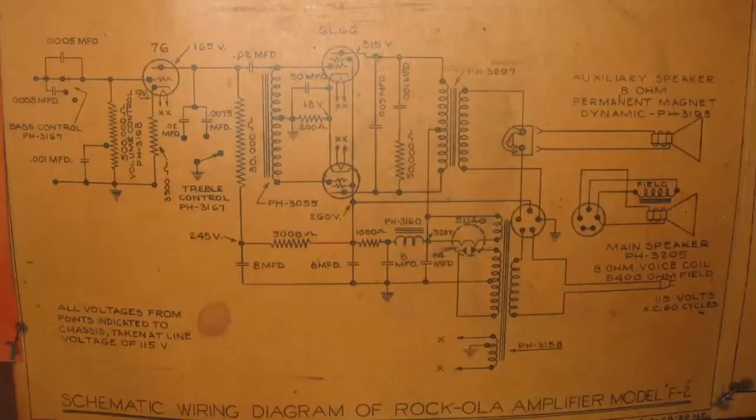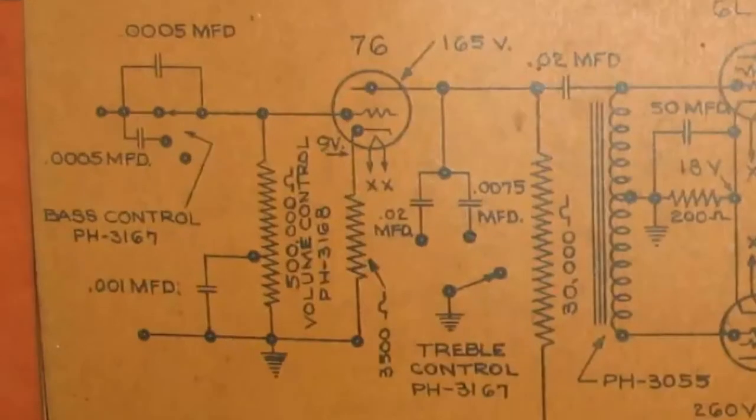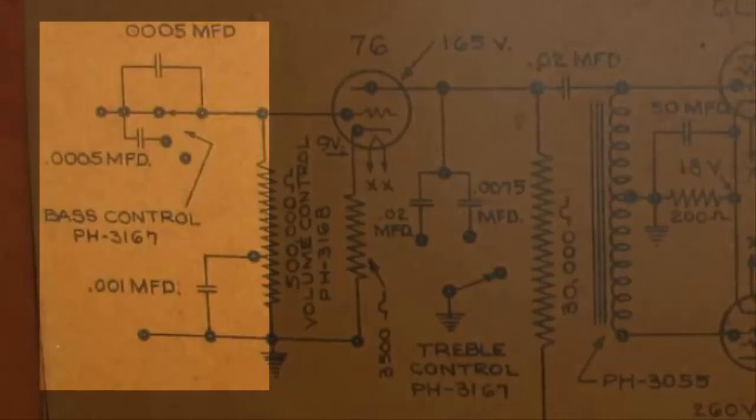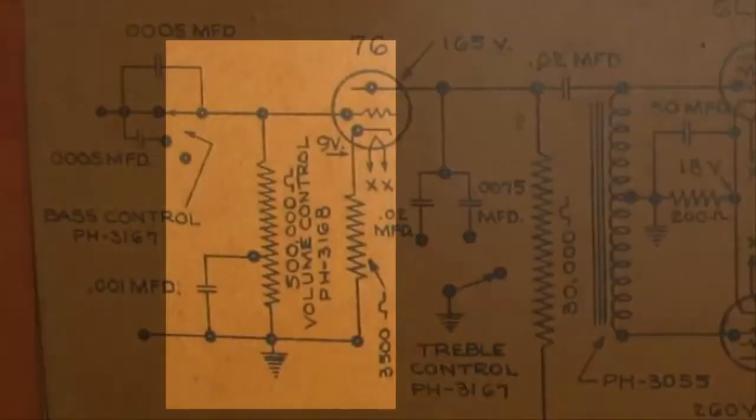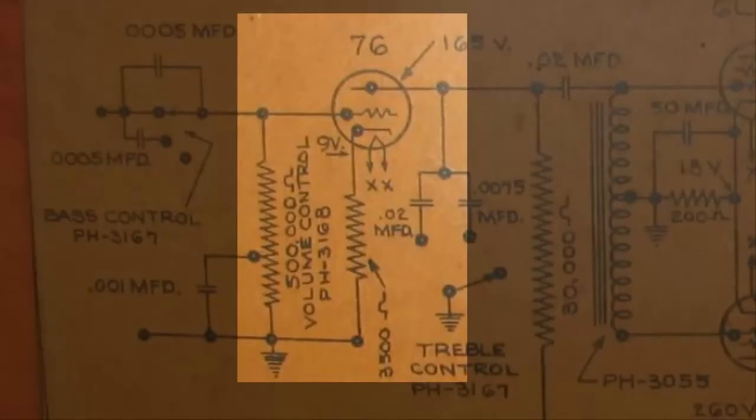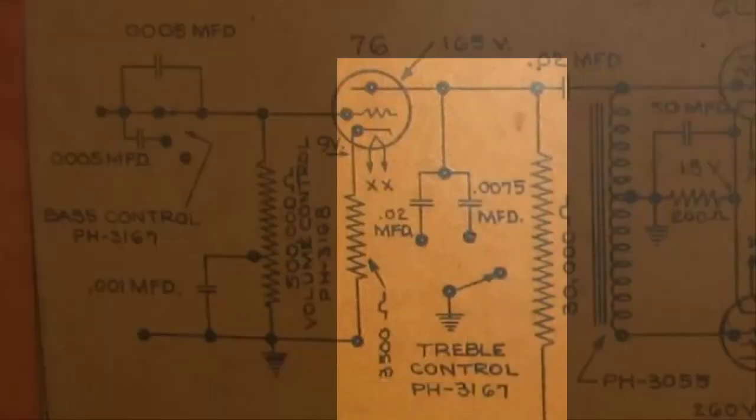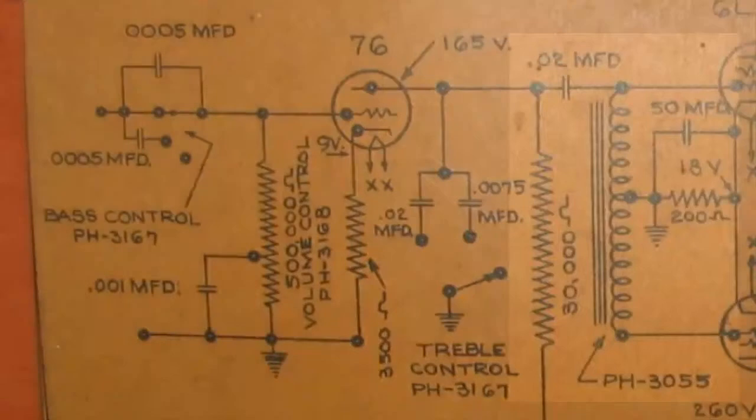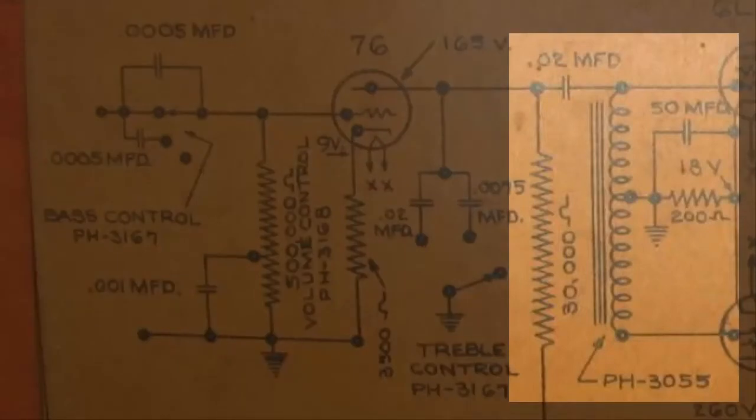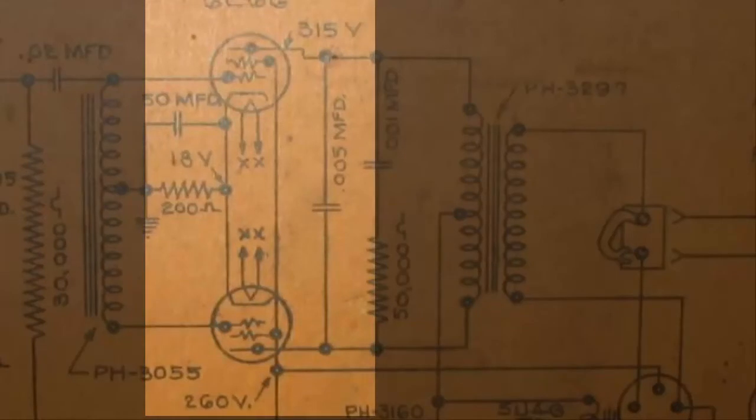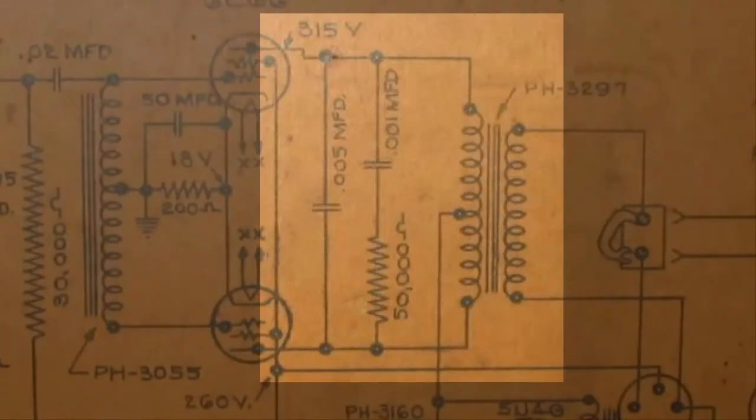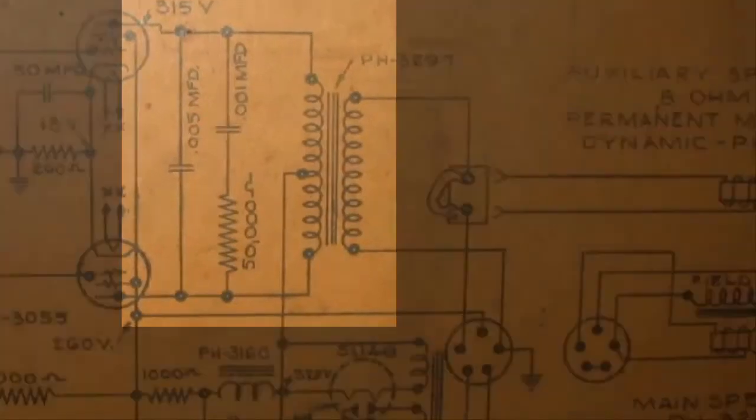So here's the schematic for the amplifier. You can see we have the pickup here on the left. First comes in there's the bass control, the volume control and a preamplifier, this vacuum tube 76, treble control, a couple capacitors for that. And it has a transformer going into the power amplifiers. There's a pair of 6L6G amplifiers, comes out of that into the transformer that then goes into the speaker.